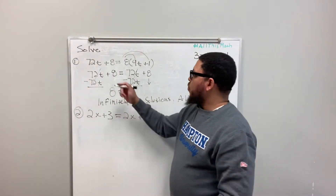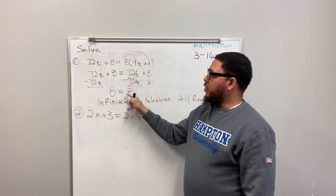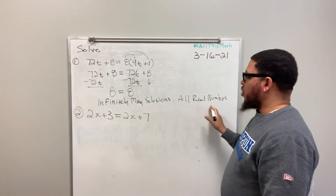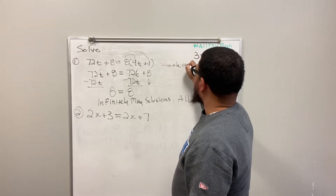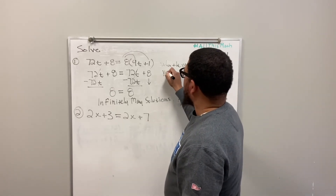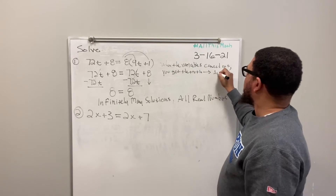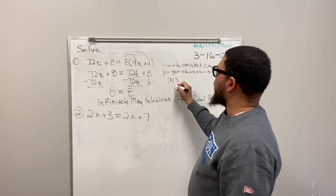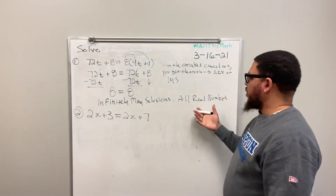The rule I want you to take away is: when the variables cancel out and you're left with a true statement — like 8 equals 8, because 8 does equal 8 — then the answer is infinitely many solutions, also called all real numbers. Those terms are synonymous because there's an infinite number of real numbers.